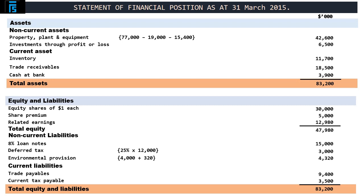Within current liabilities, we find trade payables carried at $9,400 as per the trial balance, and current tax payable of $3,500 as stated in note 5, producing a total of $12,900. When we sum the totals computed in respect of equity, non-current and current liabilities, we arrive at $83,200, a result identical to that derived for total assets.